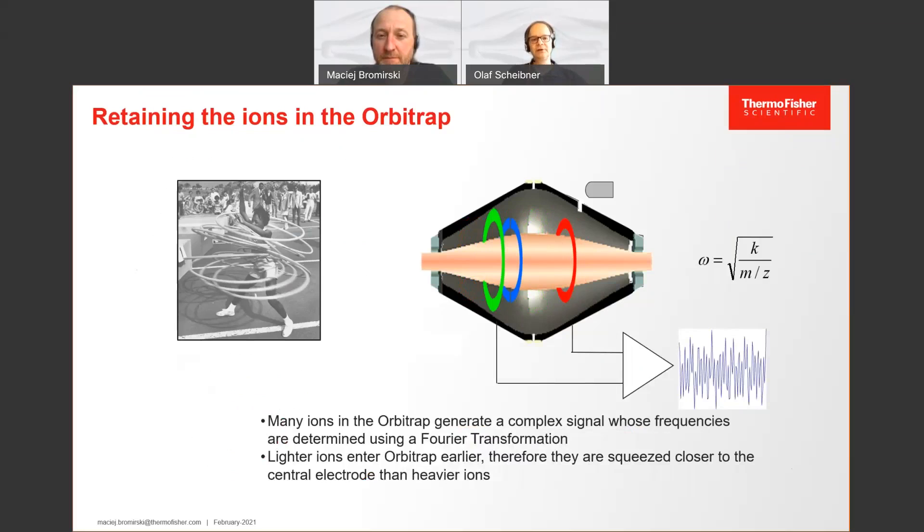But we are left with one problem that we have thousands of ions going left to right. So we have thousands of frequencies overlaid. Luckily, mathematics has found a solution to that problem earlier already. That with the principle of Fourier transformation, we can change that mix of frequencies that we detect into separate frequencies. And then we are here.